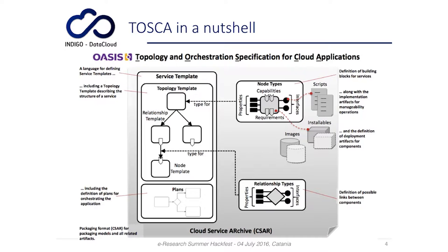The topology template consists of a certain number of node types, and the nodes are the building blocks of the services, along with implementation artifacts that are scripts or configuration files. These allow managing operations on the nodes. You can also define deployment artifacts for each component — installables, images, and so on.